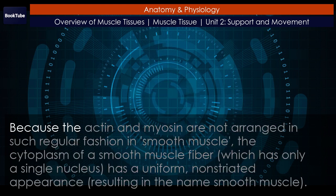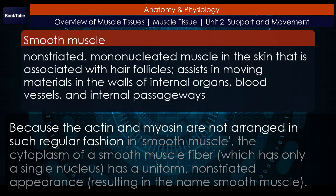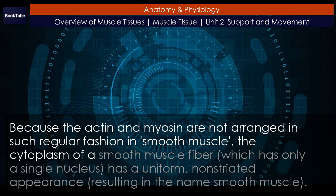Because the actin and myosin are not arranged in such a regular fashion in smooth muscle, the cytoplasm of a smooth muscle fiber, which has only a single nucleus, has a uniform, non-striated appearance, resulting in the name smooth muscle.